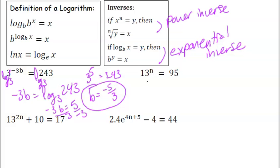Let's look at the next one. 13 to the nth power equals 95. So log base 13, log base 13, n equals log base 13 of 95.